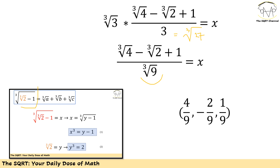Now, in the original problem x is written as the third root of a plus the third root of b plus the third root of c, so I need to identify a, b, and c. From our expression, a equals 4 over 9, b equals negative 2 over 9, and c equals 1 over 9. We have found a, b, and c to satisfy the original equation, and that's all we needed to do.